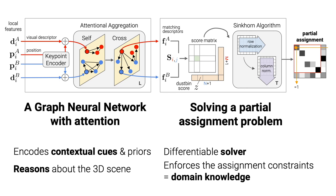SuperGlue is composed of two blocks. First, a graph neural network processes the appearances and positions of two sets of local features with powerful attention mechanisms. It encodes contextual cues and priors into deep features and reasons about the underlying 3D scene. These deep features define the cost of a partial assignment problem, which is solved with a Sinkhorn algorithm in a differentiable manner. This produces a partial assignment which handles occlusion and failures of the keypoint detector while enforcing domain-specific constraints.